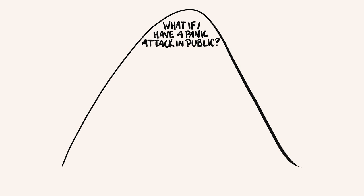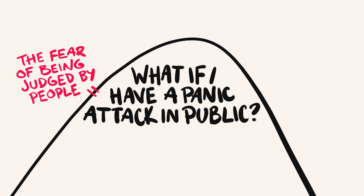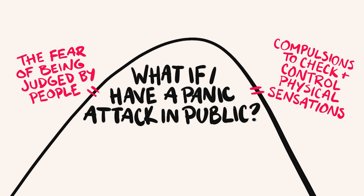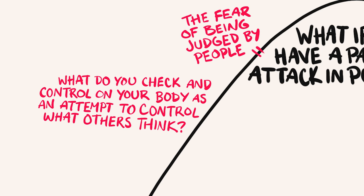We're going to visualize that with what I like to call a logic mountain. Grab your notebook again, and at the top of a page write that fear at the peak of a mountain. Write: 'What if I have a panic attack in public?' From the first part of the exercise we know that's about the fear of being judged, the fear of being hated, the fear of being alone. We also know that panic attacks and the fear of panic attacks involve lots of compulsions focused on the body - checking physical sensations, trying to control physical sensation. So this person is doing compulsions around their body in the hope of controlling what other people think.